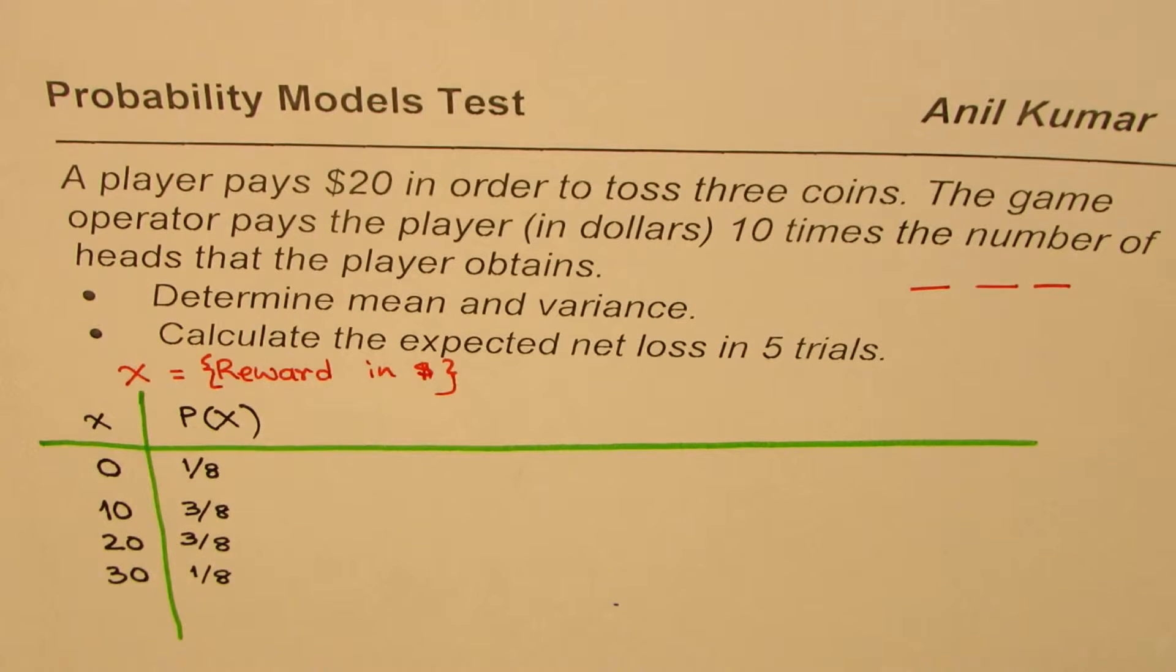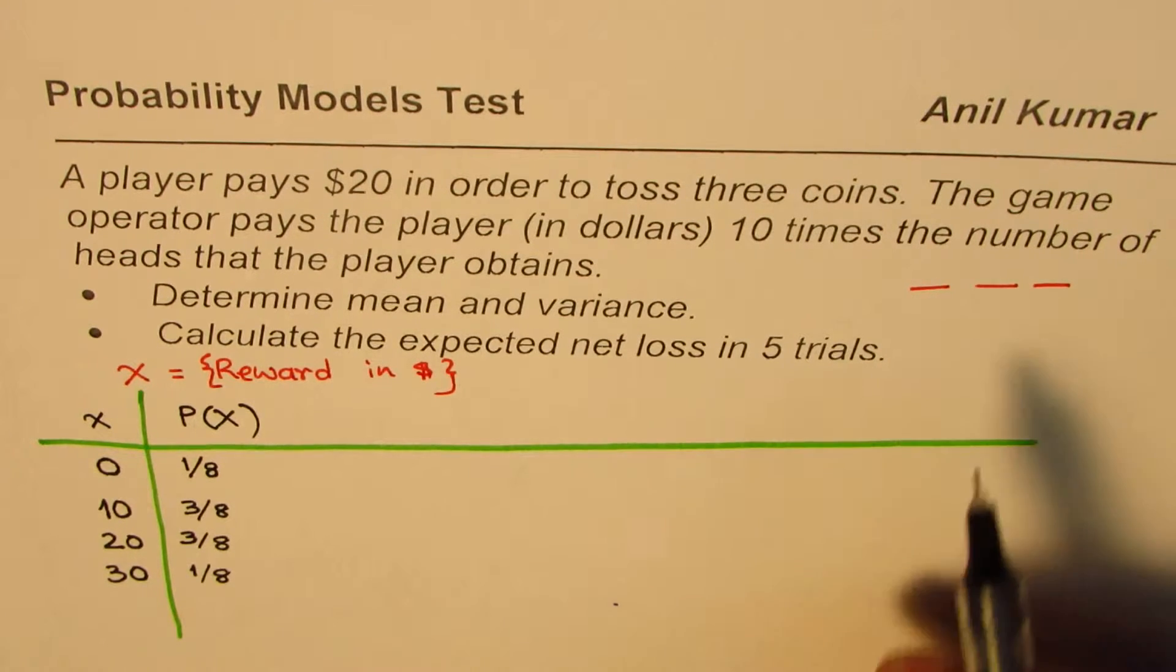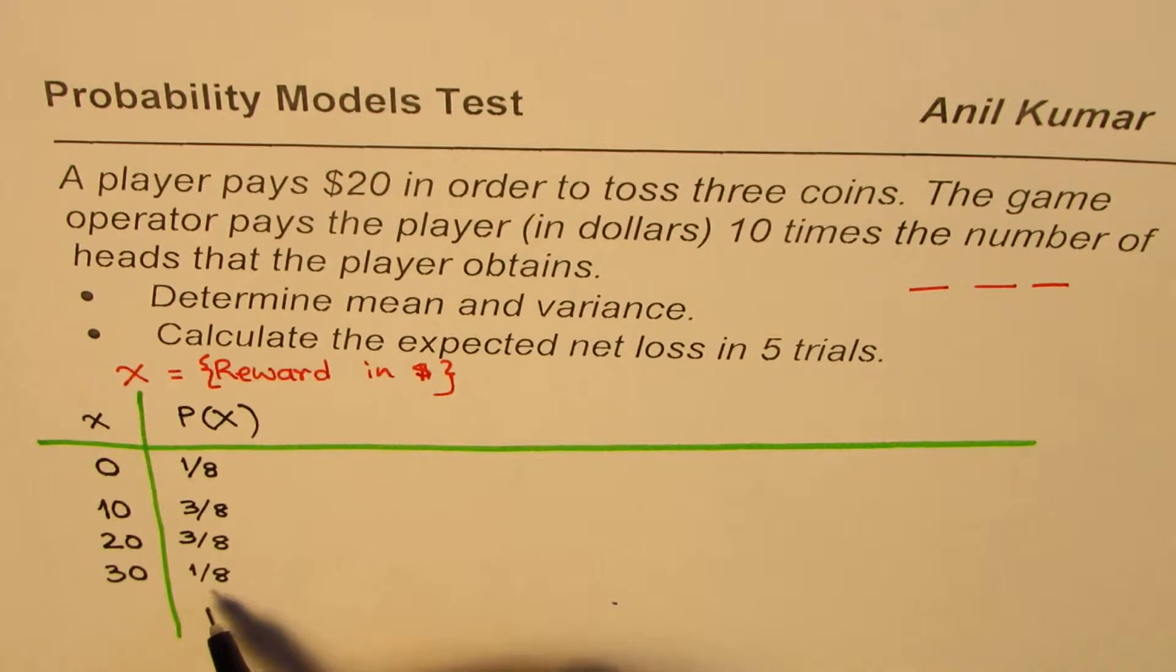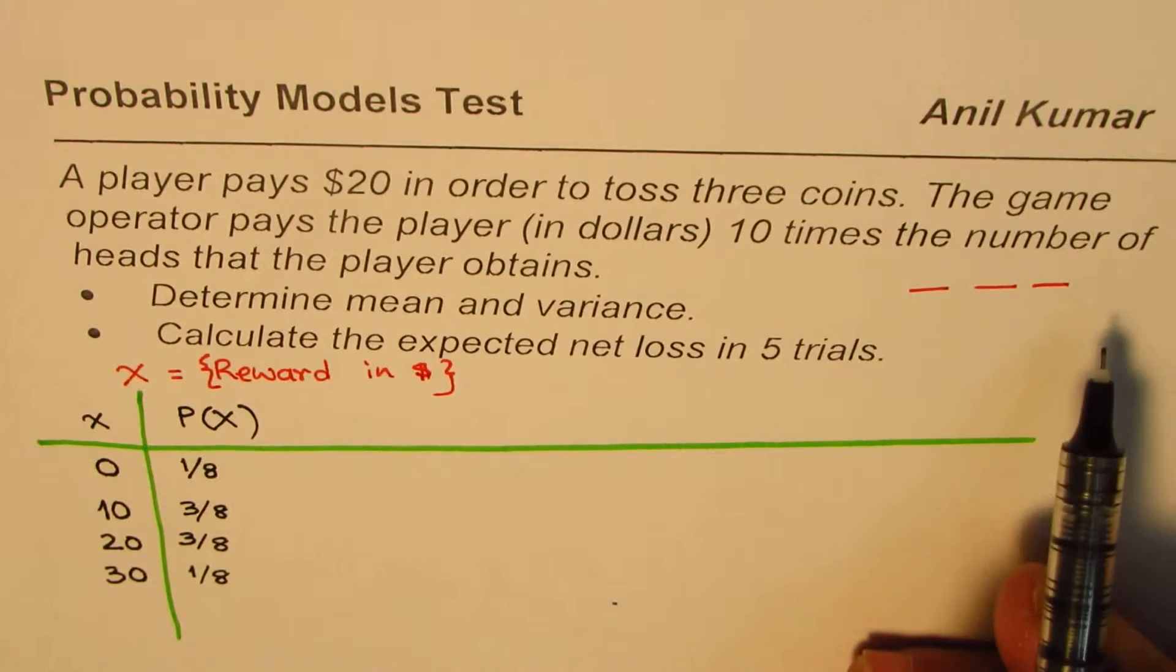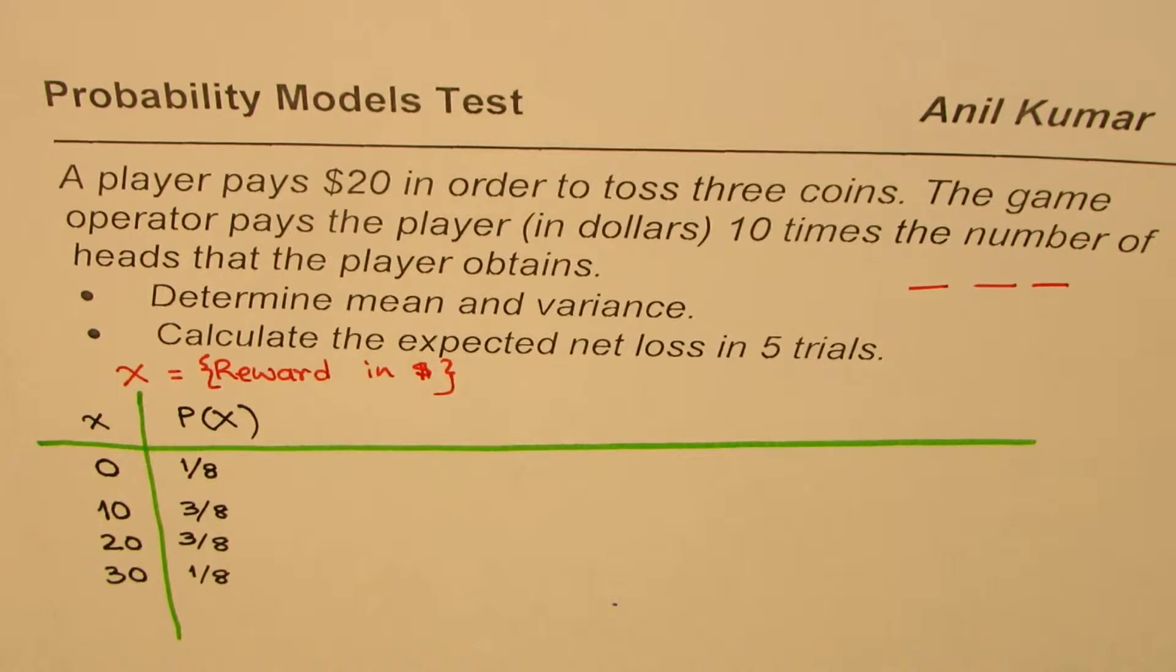So by this time, you are an expert in finding these probabilities. You could find these probabilities with the help of binomial distribution, or the general counting principle. You can use any method you want. You can also use binomial coefficients. So it is like a plus b whole cube. So these are the coefficients. So either way, you could find this probability. So I'm leaving that for you.